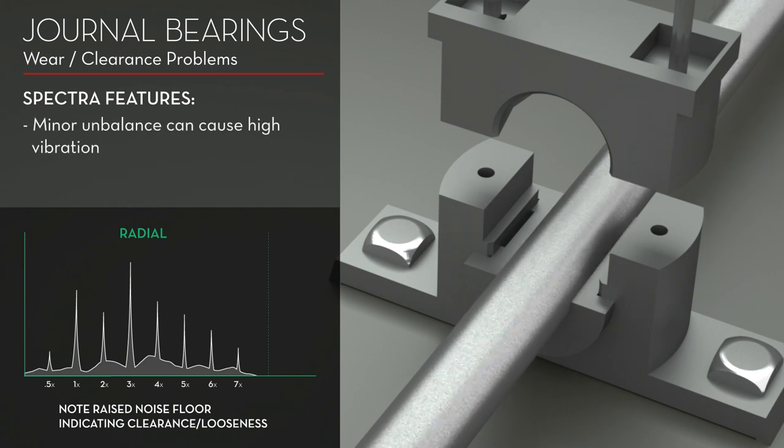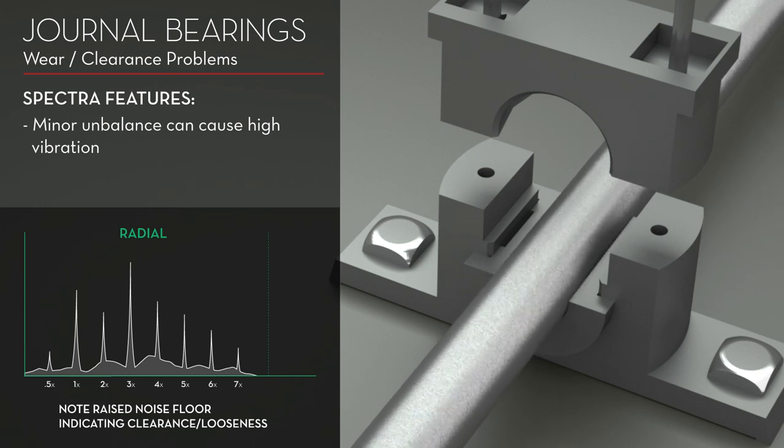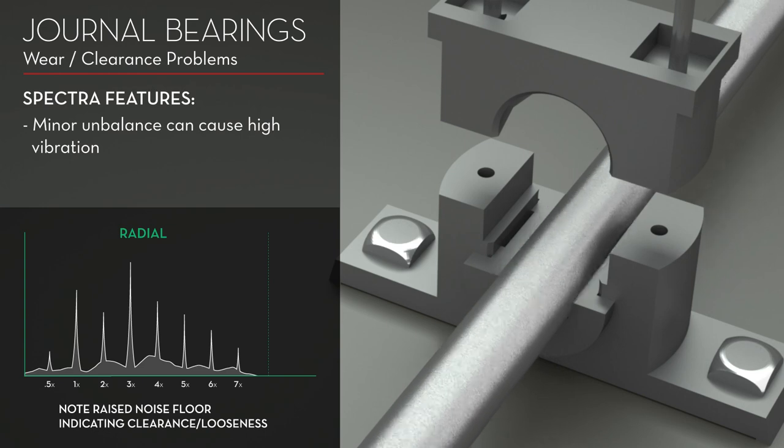Journal bearings with excessive clearance may allow a minor unbalance or misalignment to cause high vibration which would be lower under normal conditions.